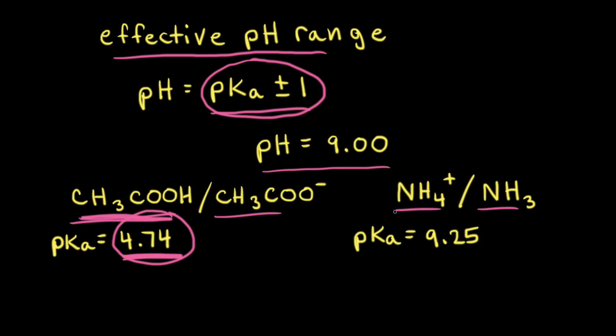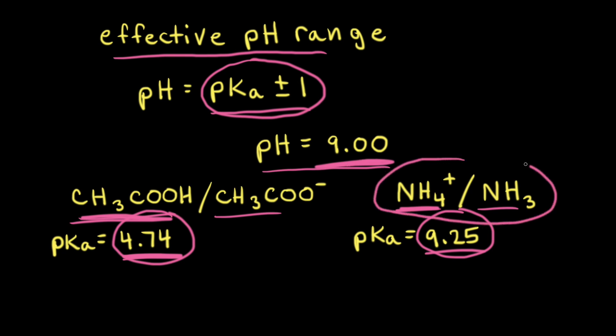The ammonium cation has a pKa value equal to 9.25 at 25 degrees Celsius. Therefore, the ammonium ammonia buffer is effective plus or minus 1 of this pKa value, so approximately 8.25 to 10.25. Since our pH of 9 falls within that range, we would choose the ammonium ammonia buffer.